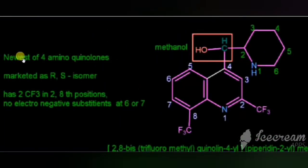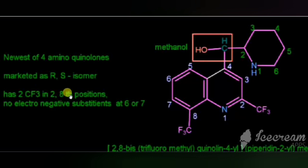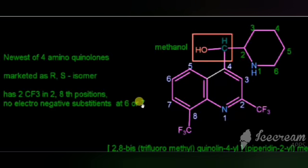Mefloquine is the newest of the 4-aminoquinolines and is marketed as R-NDS isomal. It has 2 trifluoromethyl groups — one at the 2nd portion and another at the 8th portion. It does not have electronegative substituents at the 6th or 7th position, unlike quinine (which has them at the 6th) or chloroquine (which has them at the 7th).